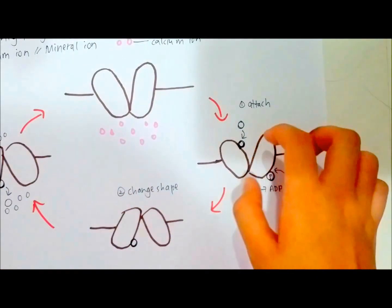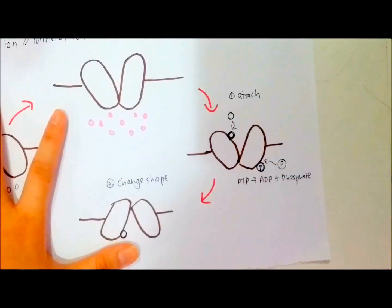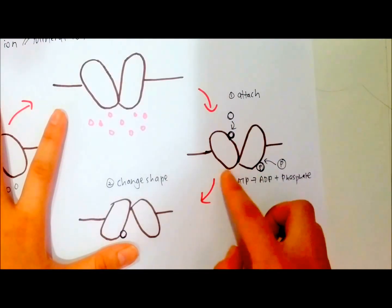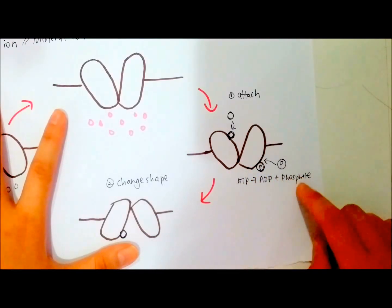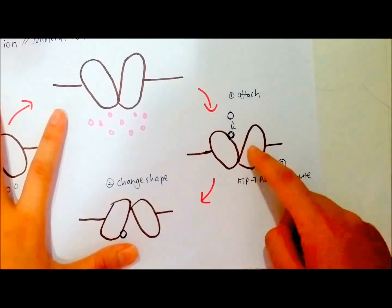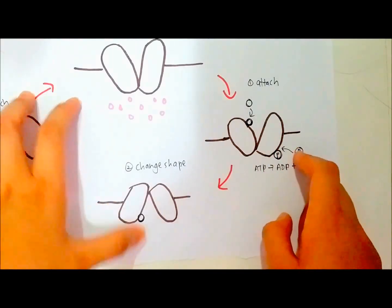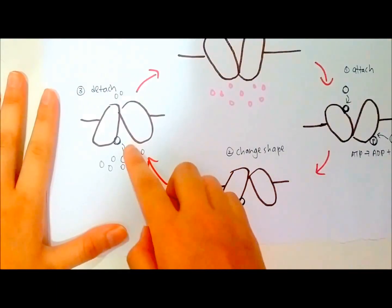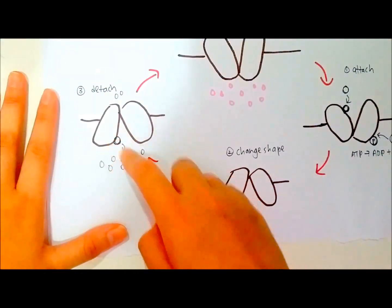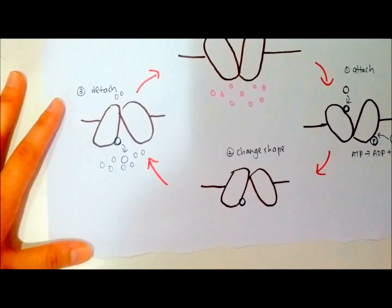The calcium ion from outside the cell will attach to the carrier protein. Since active transport needs energy, ATP will be hydrolyzed into ADP and a phosphate group. The phosphate group will then be attached to the carrier protein, which uses this energy to change its shape. Finally, the calcium ion will detach and enter into the cell. That's all for active transport.